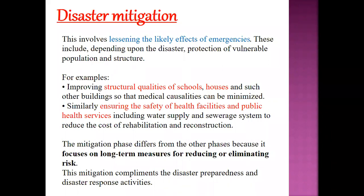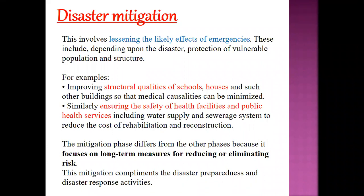Mitigation involves lessening the likely effects — we have to reduce its impact. This includes, depending upon the disaster, the protection of vulnerable populations and structures. For example, we have to build proper houses with structural quality for schools, houses, and other buildings so that casualties can be minimized. Flood relief centers are an example — in Sundarban, on every island there is a flood relief center where people stay during floods. Mitigation also ensures safety of health facilities and public health services to reduce the cost of rehabilitation and reconstruction. The mitigation phase differs from other phases because it focuses on long-term measures, whereas post-disaster measures are short-term.